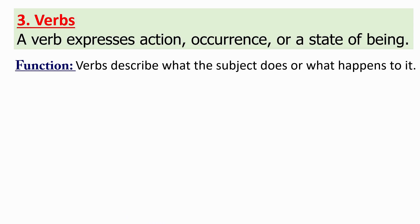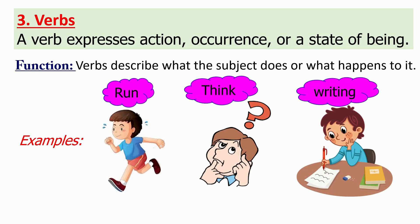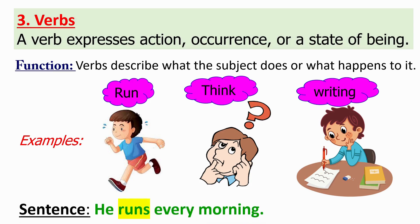Now let's check the third part of speech: verbs. A verb expresses action, occurrence, or a state of being. Verbs describe what the subject does or what happens to it. For examples: run, think, writing, etc. Now let's check a sentence: "He runs every morning." Here, the word runs is the verb and it expresses an action.